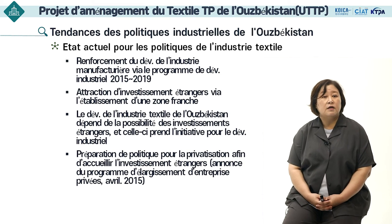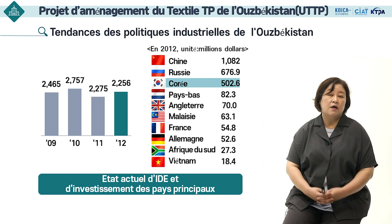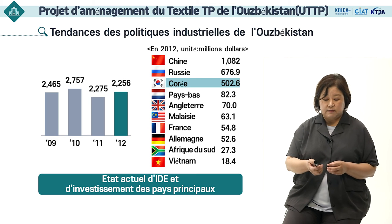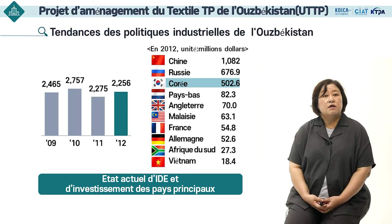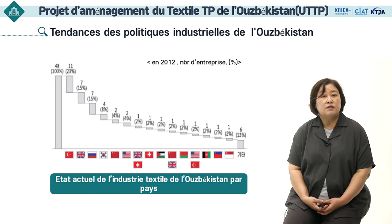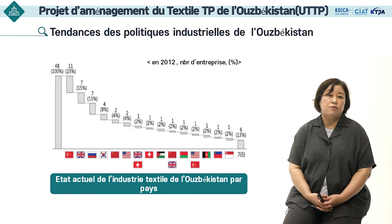En avril 2015, un programme d'expansion des entreprises privées a été annoncé et le gouvernement œuvre activement afin d'attirer les entreprises à capitaux étrangers. Les données de 2012 indiquent que la Chine est le premier pays investisseur dans l'industrie textile en Ouzbékistan, vient ensuite la Russie et la Corée du Sud comme troisième investisseur important. Pour l'état actuel de la plantation de l'industrie textile de l'Ouzbékistan, la Turquie se positionne au premier rang, suivie de l'Angleterre, la Russie, la Corée du Sud et la Chine.